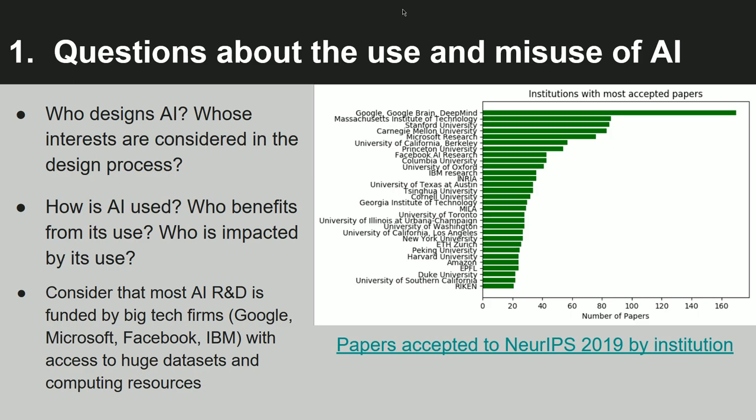There are three broad questions in AI ethics. One is about the use and misuse of the technology itself. Two is about the training and development of those algorithms. Three is about the legal and regulatory environment that constrains the use and applications of these technologies — what laws and regulatory frameworks protect users and the public from abuses, security failures, and other risks. We might ask who designs AI projects, whose interests are considered in the design process, and whose interests are excluded or ignored. These correspond to questions we ask about engineering projects generally.